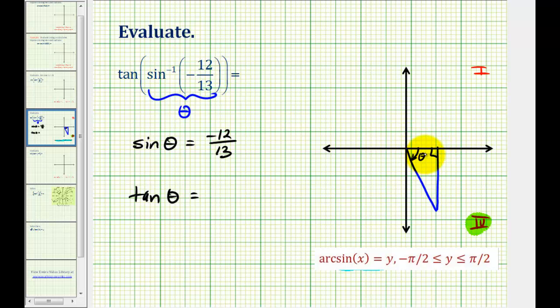So here's our angle theta. We can label the opposite side negative twelve and the hypotenuse thirteen. Remember the hypotenuse is always positive and the legs can be positive or negative. So now using the Pythagorean theorem, we can determine the length of this leg here. This is a five, twelve, thirteen right triangle. Just in case we didn't know that, we can go ahead and label this x.